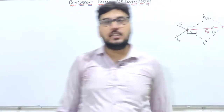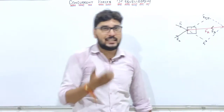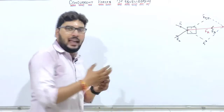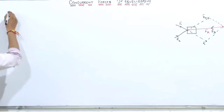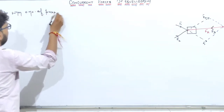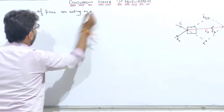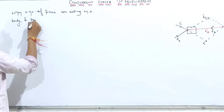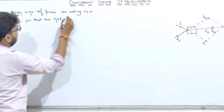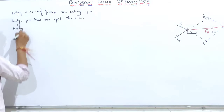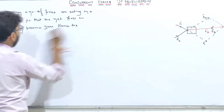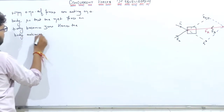The force in the opposite direction of the resultant will be F3. Concurrent forces of equilibrium ka matlab hai ki number of forces ek body pe lag rahi hain, aur number of forces lagne ke bawajood woh body rest pe rehti hai. When a number of forces are acting on a body such that the net force on the body becomes zero, hence the body achieves equilibrium.